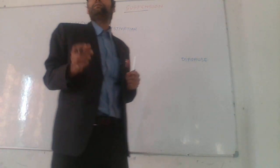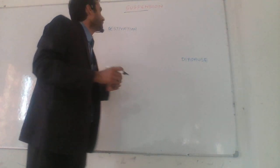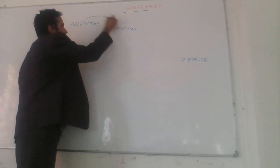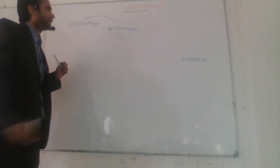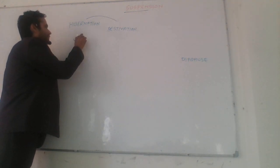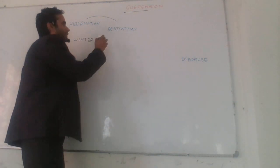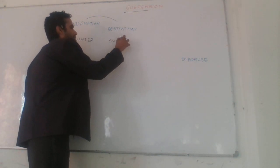In different organisms, different conditions govern the suspension. There are two types of suspension: hibernation and estivation. Hibernation is also known as the winter sleep and estivation is the summer sleep. Don't confuse.